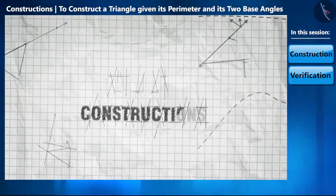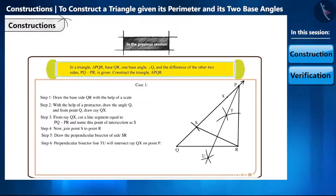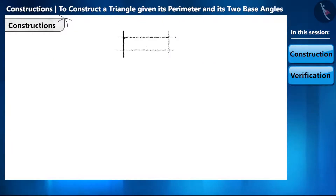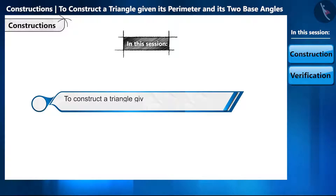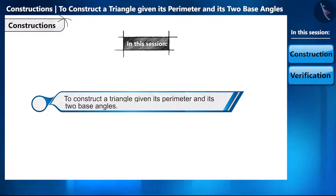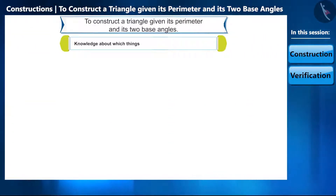Hello friends, welcome to this video on constructions. In the previous video we solved some questions based on the construction of a triangle - we constructed triangles for which information about their base side, one base angle, and the difference of the other two sides was given. In this video we will learn to construct a triangle for which information is given about the sum of its three sides, that is the perimeter, and the measure of its two base angles.